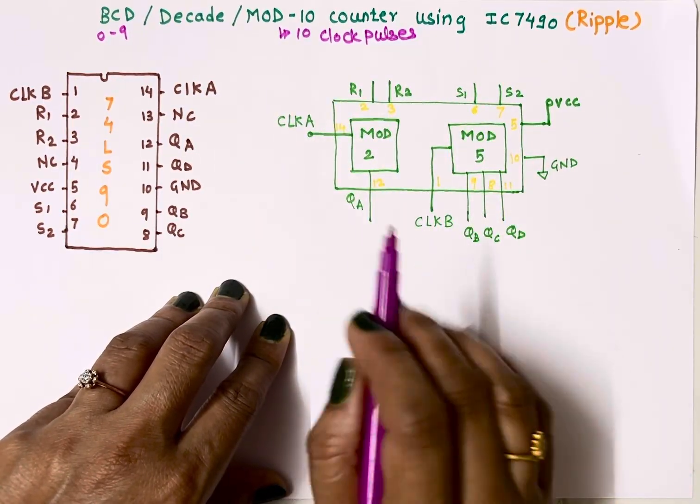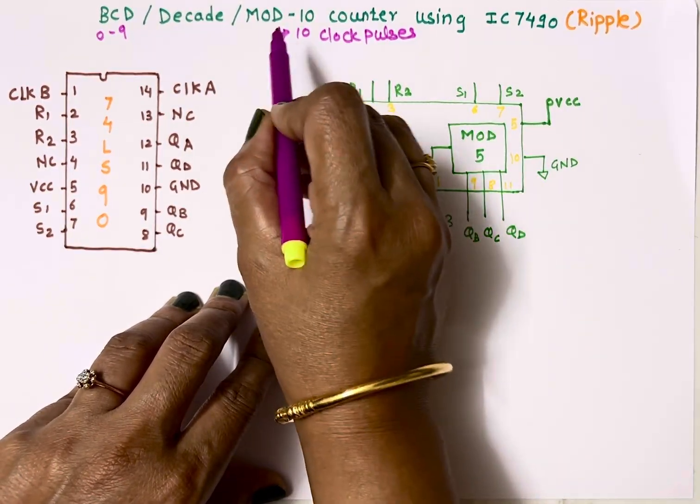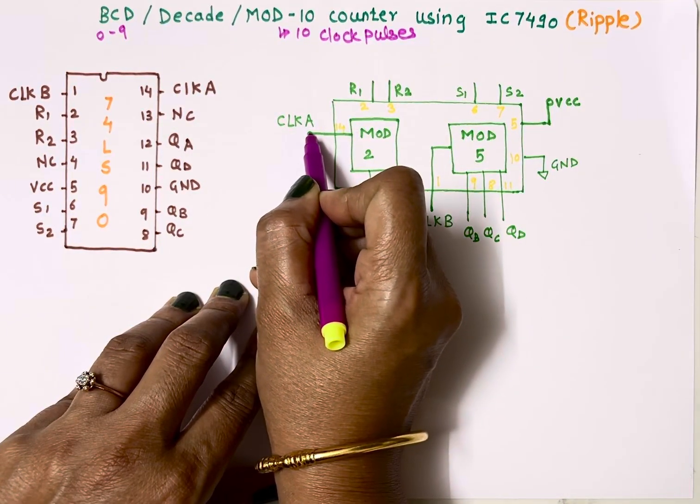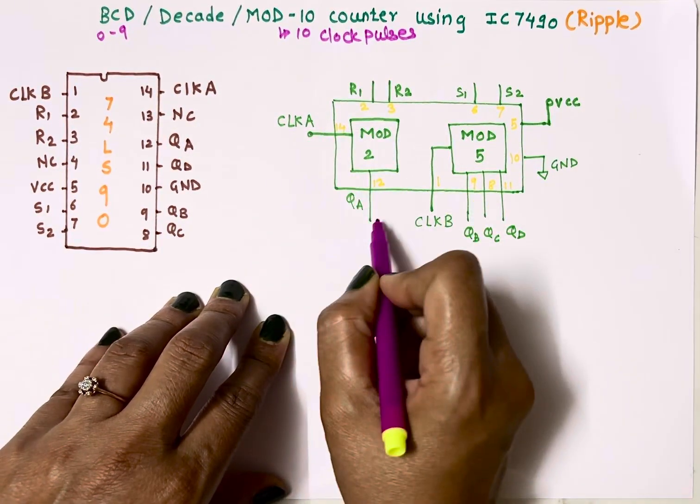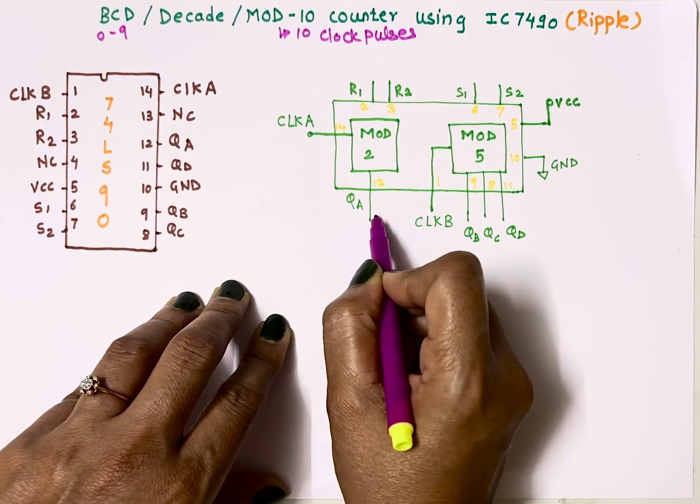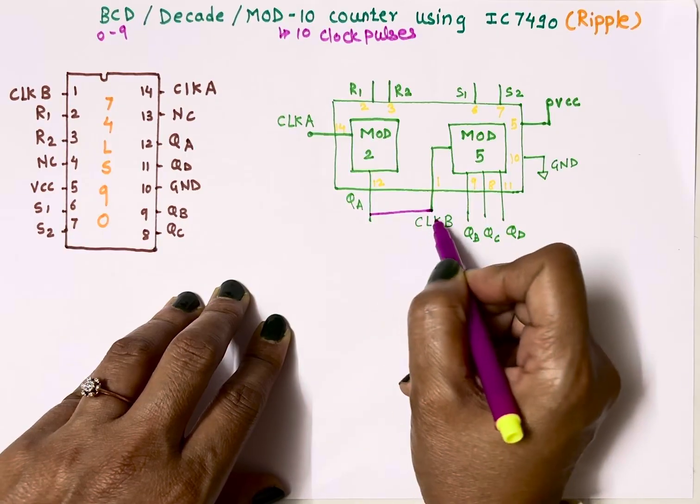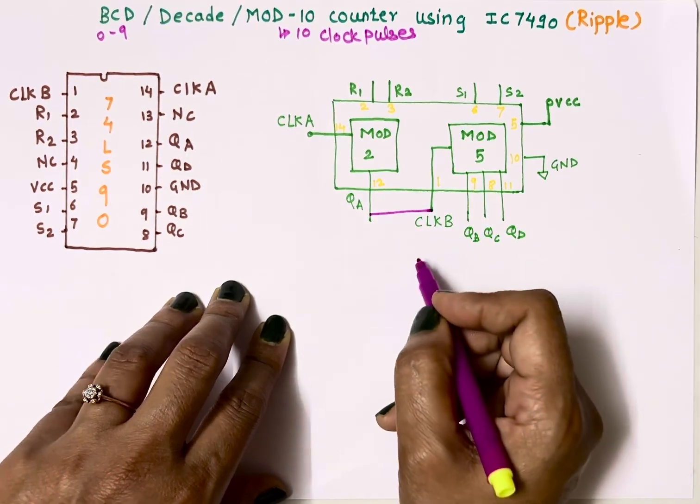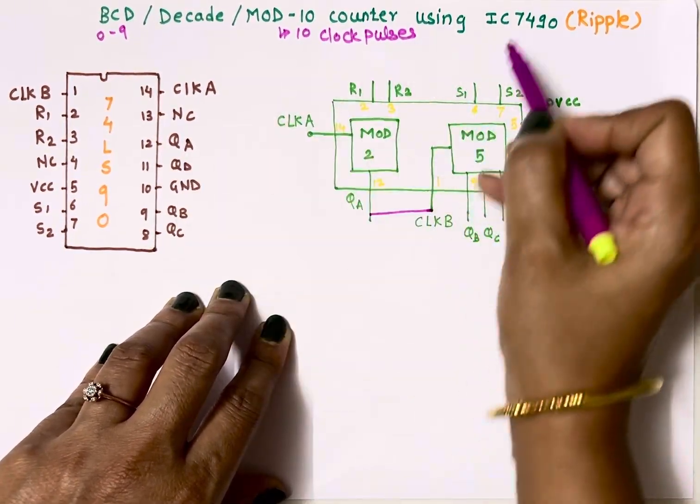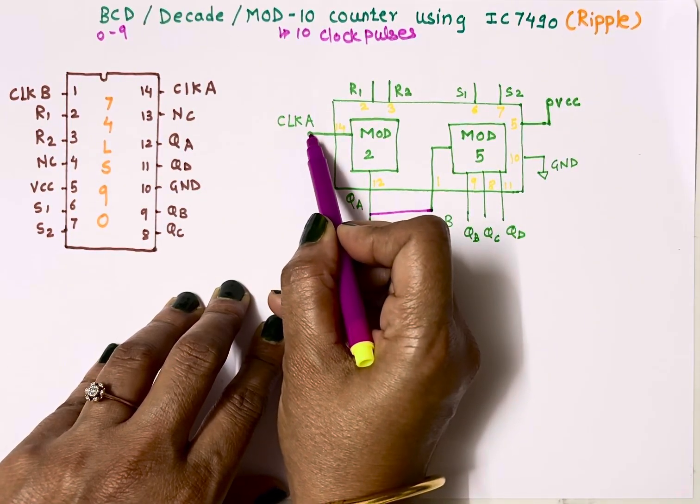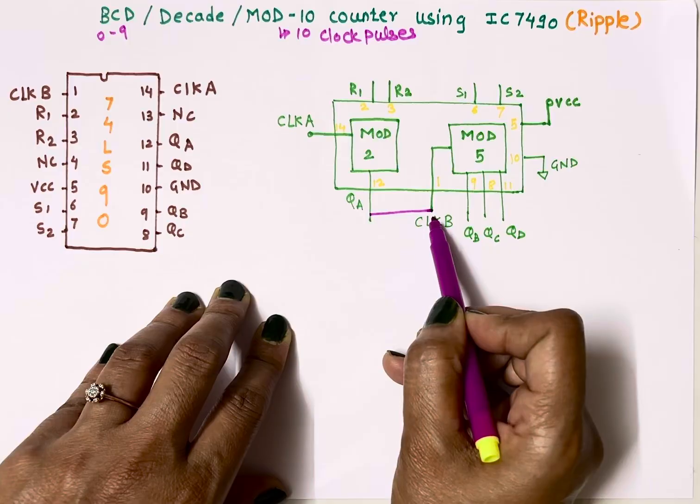To implement mod-10 counter we will connect external clock to clock A and output of first flip-flop will act as clock input to second flip-flop, so QA will get connected to clock B. Always to implement any counter using IC7490, external clock is connected to clock A and QA is connected to clock B.